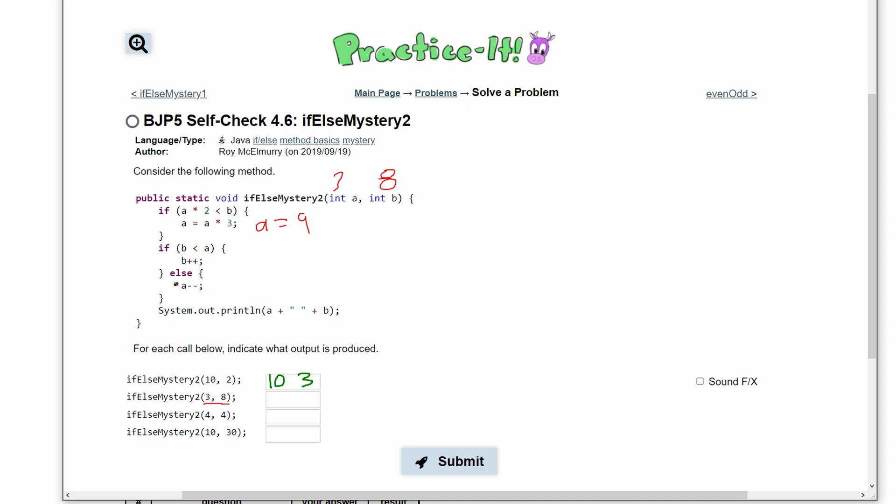Now we look at this if-else statement here. We know our a to be 9, so our a is greater than our b. That means we're going to be inside of this if-statement, not this else-statement. Inside of the if-statement, we have a b++, so our b is now going to equal 9. That means for our answer, we are going to have 9 and 9.